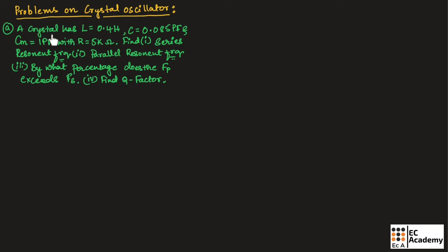A crystal oscillator has L equal to 0.4 Henry, C equal to 0.085 picofarad, and Cm equal to 1 picofarad with R equal to 5 kilo ohm. Here we need to find the series resonant frequency, the parallel resonant frequency, the percentage by which the parallel resonant frequency exceeds the series resonant frequency, and the Q factor.